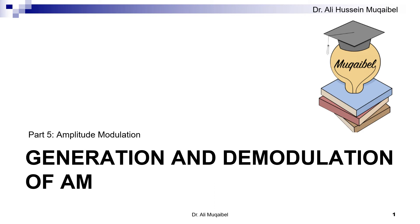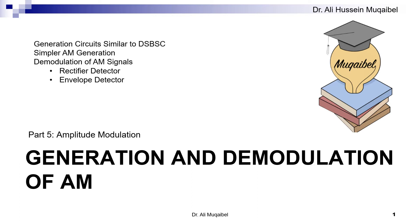Now that we have defined AM modulation, double sideband plus carrier, it's time to see how to generate and demodulate these signals. So, modulation and demodulation of AM signals. Specifically, we'd like to go over the generation circuits, which are similar to double sideband suppressed carrier, then the simpler generation of AM, and then the demodulation process, which includes rectifier detector or envelope detector.